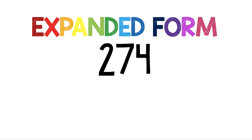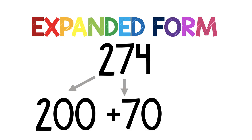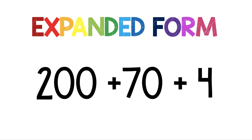For expanded form, we're going to take that 2 and we know that the 2 is in the hundreds place, so it means 200. For expanded form we're going to write that all the way out: 200. The 7 is in the tens place, so we know it doesn't just mean a plain old 7 — since it's in the tens place it means 70. The 4 is in the ones place so it just means 4. So expanded form is 200 plus 70 plus 4.